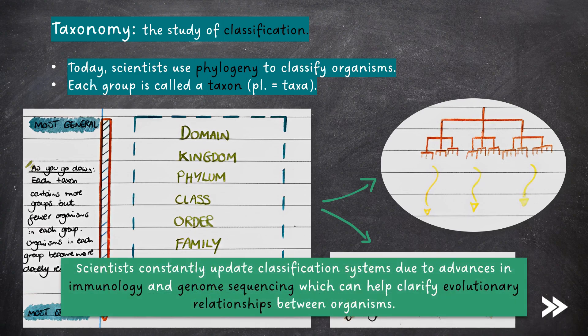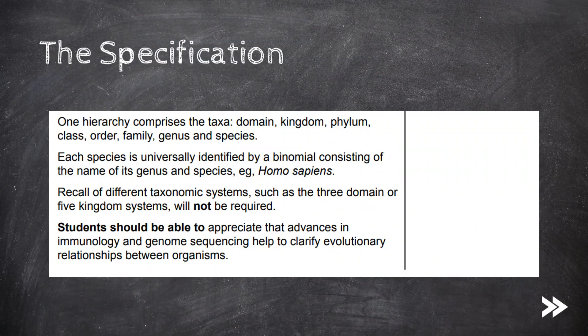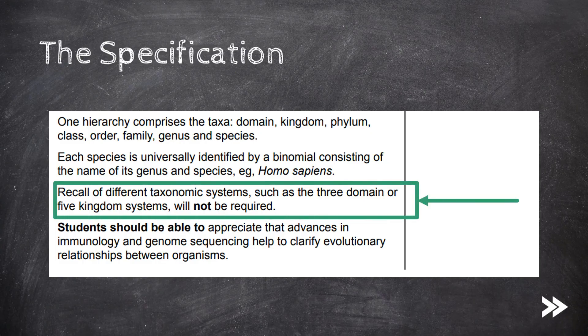Note that scientists are constantly updating classification systems due to advances in immunology and genome sequencing, which can help clarify evolutionary origins and relationships between organisms. Note that you do not have to be able to recall examples of different taxonomic systems — you only have to know the names of the different taxa.